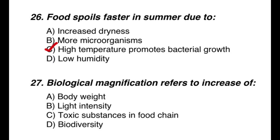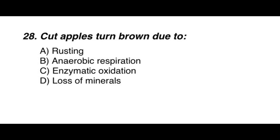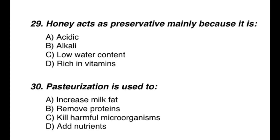Question 27: Biological magnification refers to the increase of — the correct option is C — toxic substances in the food chain. Question 28: Cut apples don't brown due to — the correct option is C — enzymatic oxidation. Question 29: Honey acts as a preservative mainly because it has — the correct option is C — low water content. Question 30: Pasteurization is used to — the correct option is C — kill harmful microorganisms.